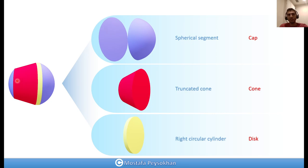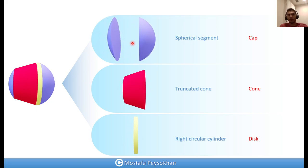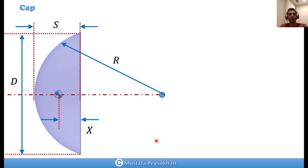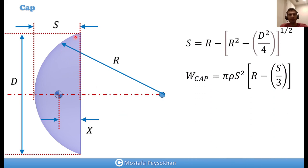For example, for this lens we have two caps, a spherical segment, a truncated cone, and a right circular cylinder. For the cap, for example for this lens, the diameter is d. There is an equation for sagittal depth, which is the distance from the top part of the lens to the bottom part. Sagittal depth can be measured using this equation: r minus the square root of r² minus d²/4.